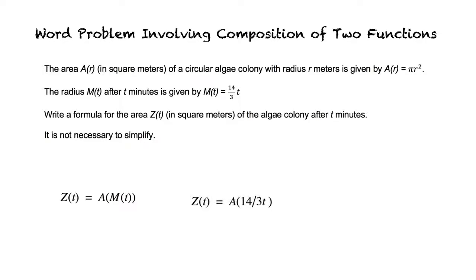This will result in Z(t) = A((14/3)t). Now we can insert (14/3)t into the function A(r) for the variable r, which gives us our final result: Z(t) = π((14/3)t)².